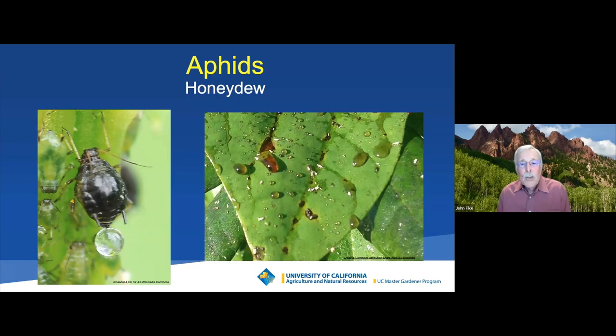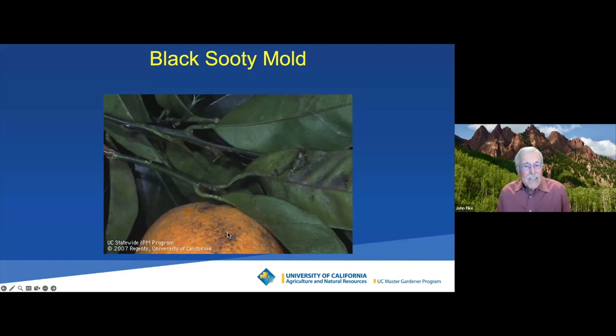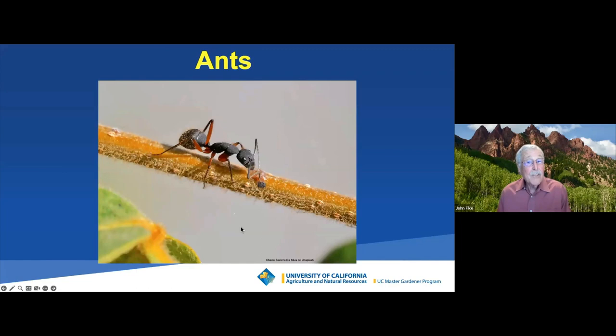The honeydew does another thing — it's a perfect growth medium for a fungus called black sooty mold. It's just unsightly; it won't really kill the plant, but it's unsightly. You see this on citrus. But the honeydew has another adverse effect and it brings us to our second bad bug — the ant. The Argentine ant is that little black one that's all over your backyard and sometimes comes into your house.